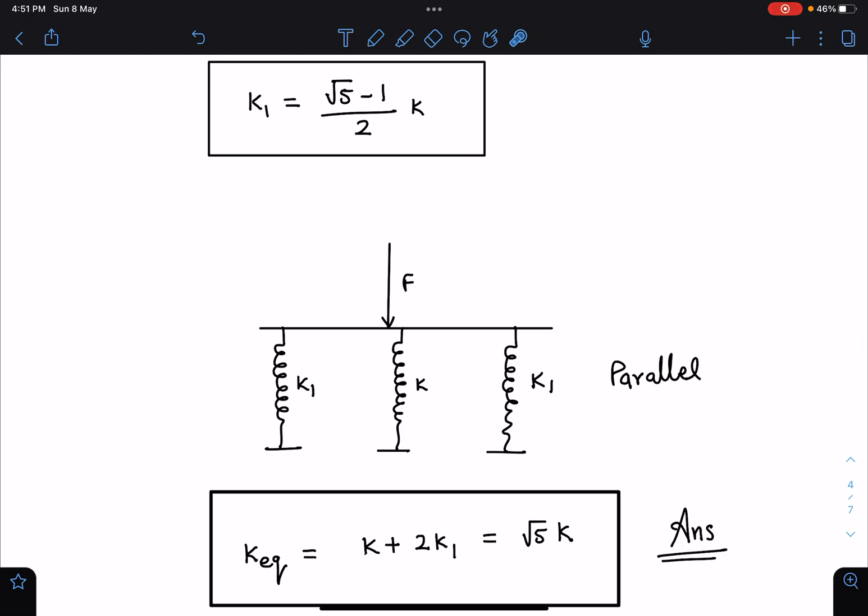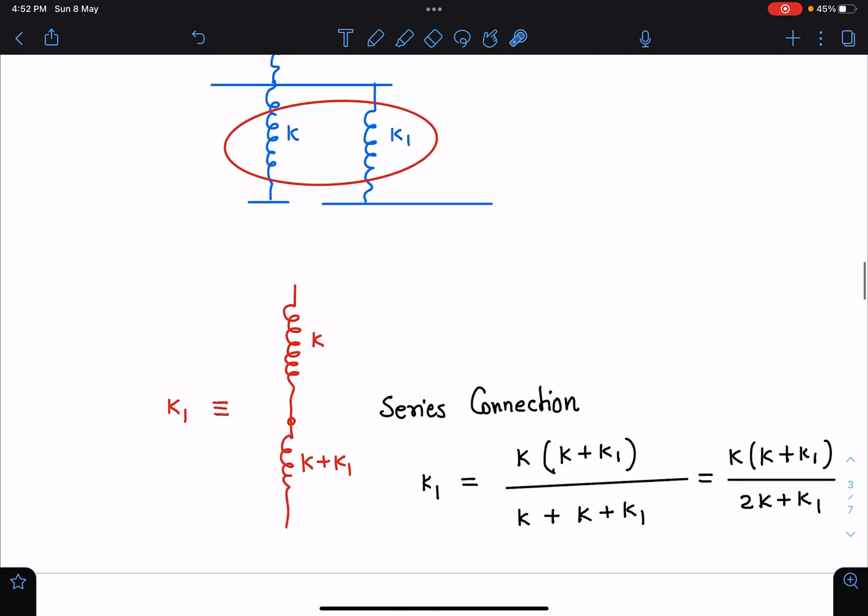√5k. You can say 2k1 plus k, bring this side, so it becomes √5k. This is the answer for this problem. I hope you have enjoyed this short trick. The official solution uses the recursion method and it's quite lengthy using infinite GPs, so this one is far superior.